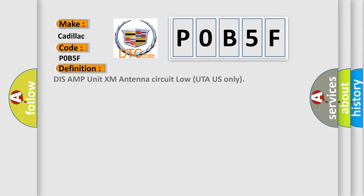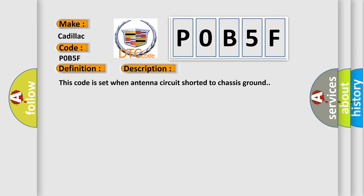The basic definition is DISS AMP Unit XM Antenna Circuit Low UTA US Only. And now this is a short description of this DTC code. This code is set when antenna circuit shorted to chassis ground. This diagnostic error occurs most often in these cases.